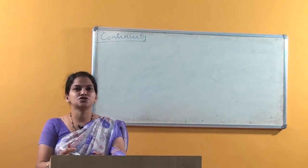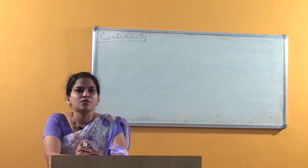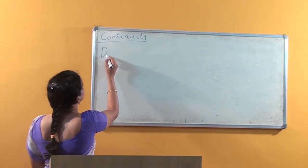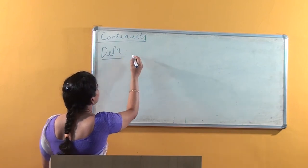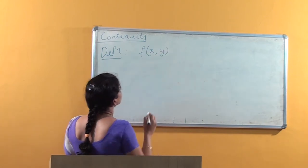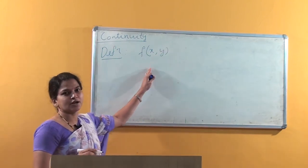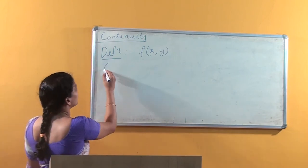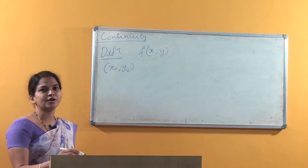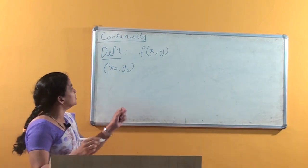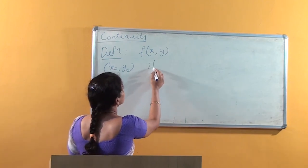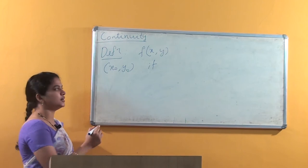Let us look at the definition of continuous function of two variables. Here is the definition. Consider the two-variable function f(x, y). We say that f(x, y) is continuous at a point (x0, y0), some particular point (x0, y0) in the domain of definition of f, if this function satisfies three conditions.